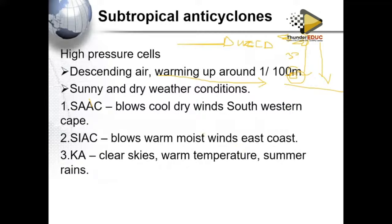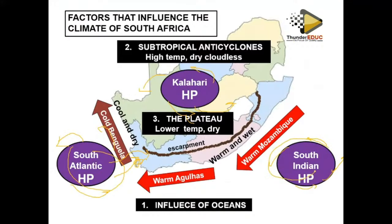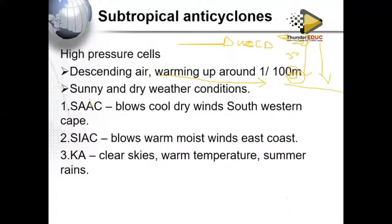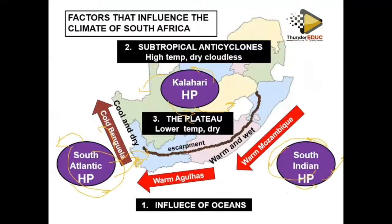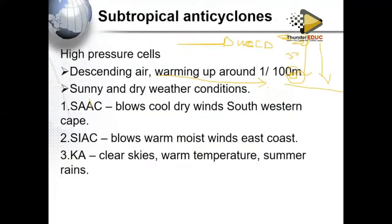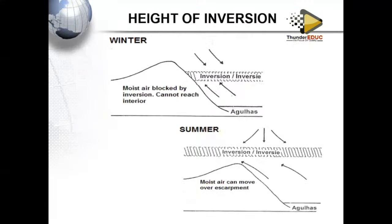Then we have the South Indian high pressure, which blows warm moist winds on the east coast. Since it is found on the east, as it blows it brings moist conditions to the east coast of southern Africa. The Kalahari anticyclone is responsible for clear skies, warm temperatures, and summer rains.